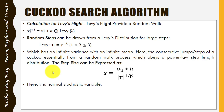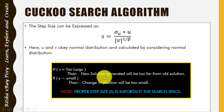In cuckoo search, a cuckoo searches for a suitable host nest for laying eggs — this is a random searching process. We calculate Lévy flight using the distribution, where random steps can be drawn from a Lévy distribution. A Lévy distribution means a series of smaller steps. The step size can be expressed using a specific equation. If the value calculated for s is too small, the new solution will be far from the old one.